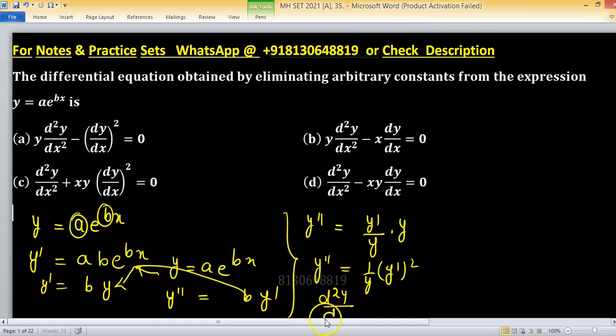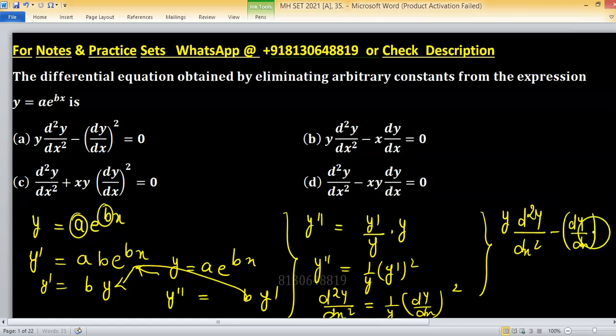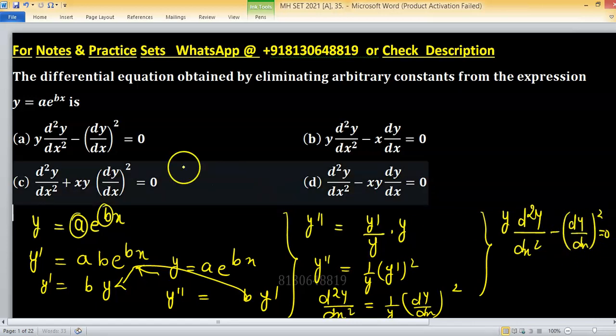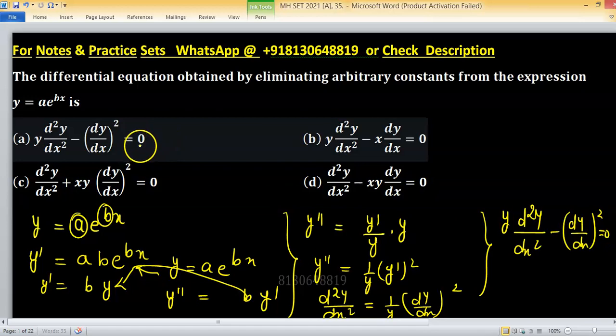d²y over dx² equals one upon y times dy over dx whole squared. By multiplying by y: y d²y over dx² minus dy over dx whole squared equals zero. So option A will be the right one.